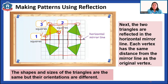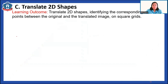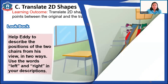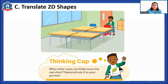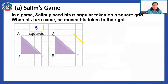Now let's move on to translation — translating shapes. Help Eddie describe the positions of two chairs from his view using the words left and right. Eddie wants to change the position of the two chairs. We also have a game where Salim placed his triangular token on a green square. When his turn came, he moved his token to the right — from here to here.